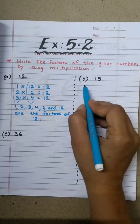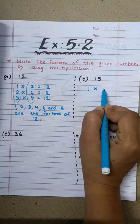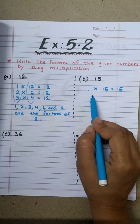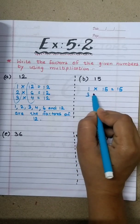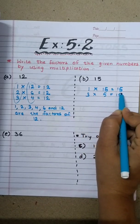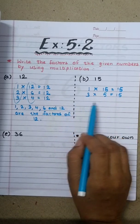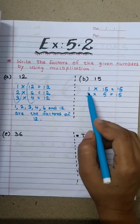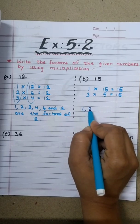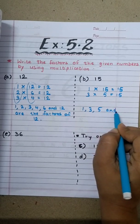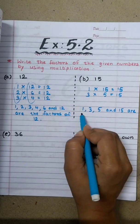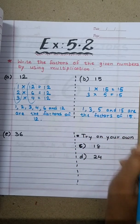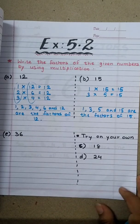Going to 15. We'll start with 1 — 1 fifteen is 15. Then 2 — 15 does not fall in the table of 2. So we go to 3 — 3 fives are 15. Then 4 — 15 does not fall in the table of 4. And 5 is already over here. So, 1, 3, 5 and 15 are the factors of 15.